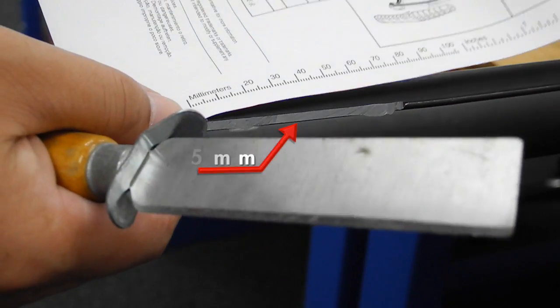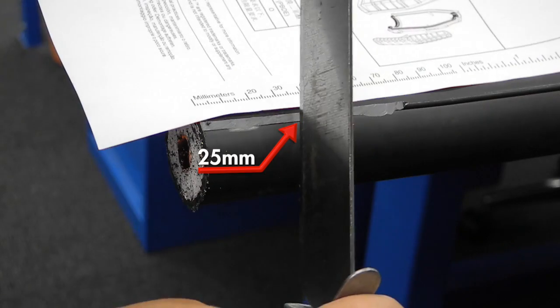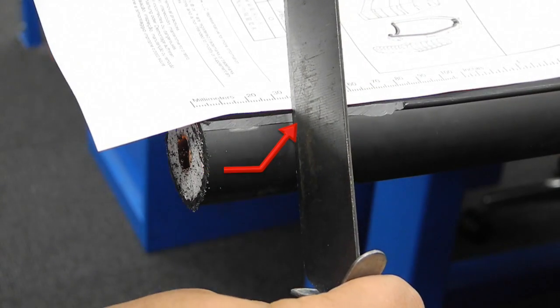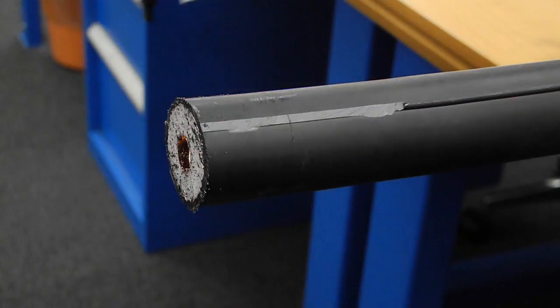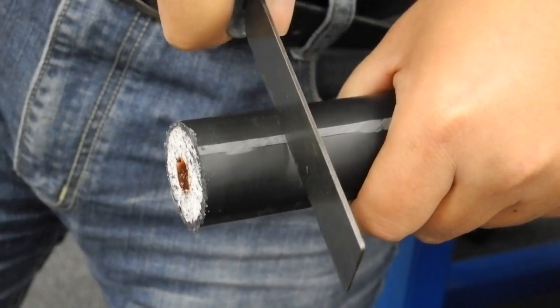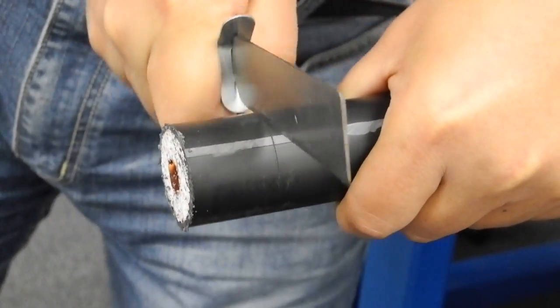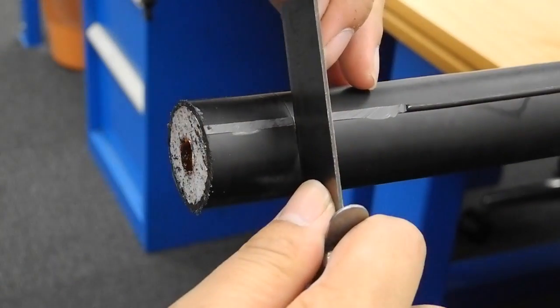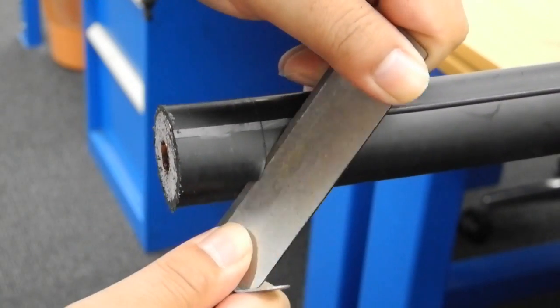Measure 25mm from the cable end. Score the jacket, taking care not to cut the copper foil. Then remove the jacket.